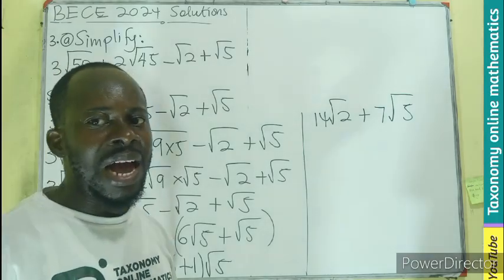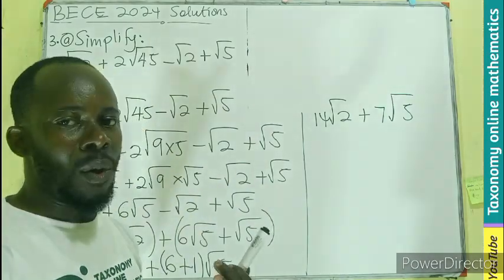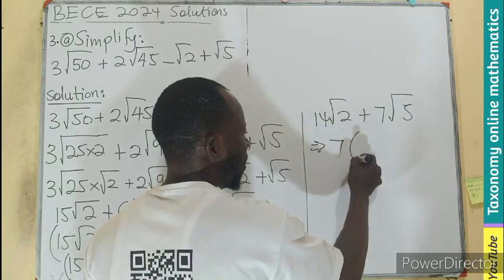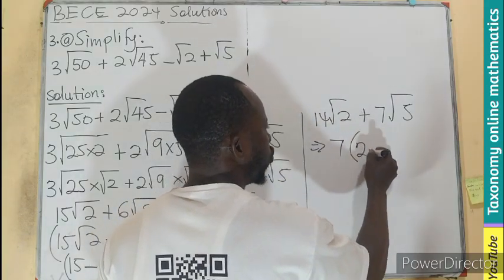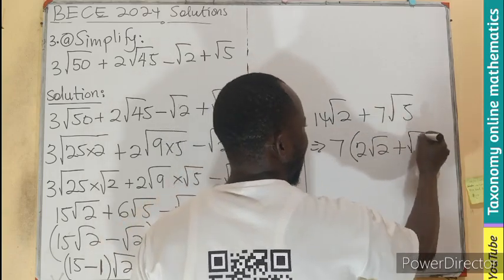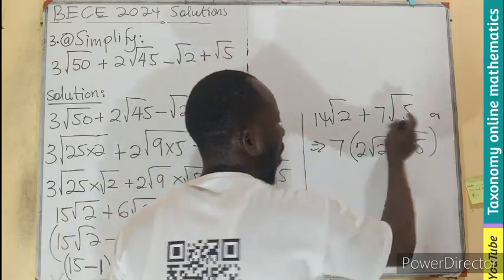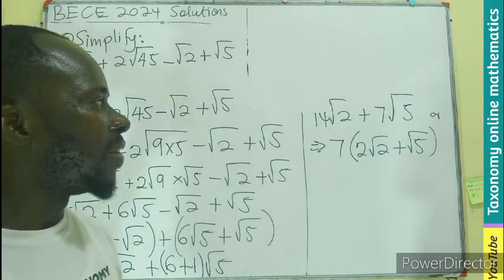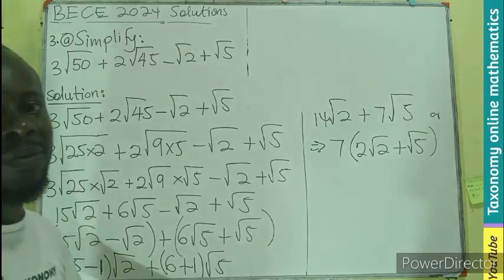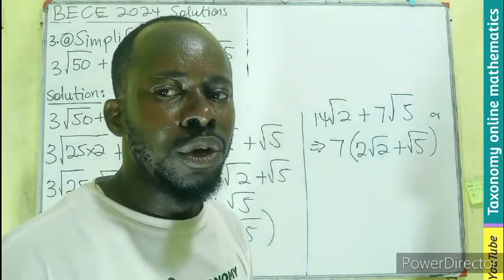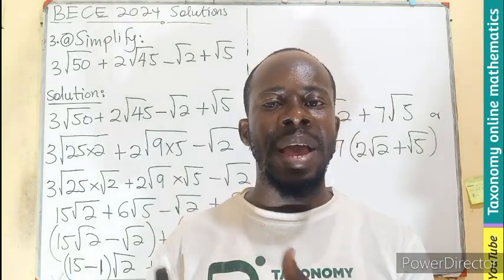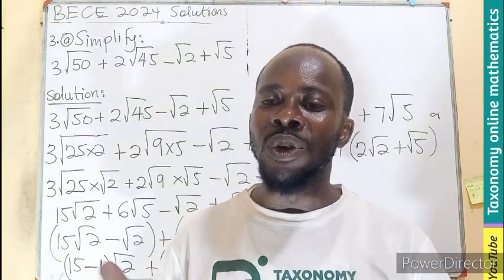So this is the answer: 14 root 2 plus 7 root 5. I can leave it this way, but I can also factorize the common factor. 7 goes into bracket: 7 divided into 14 root 2 gives 2 root 2, and 7 divided into 7 root 5 gives 1 root 5. So the answer is either 14 root 2 plus 7 root 5, or factorized as 7(2 root 2 plus root 5). When asked to simplify, reduce all big numbers that have a factor of a perfect square and a non-perfect square, then you are good to go.